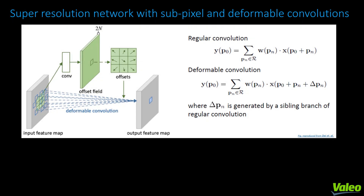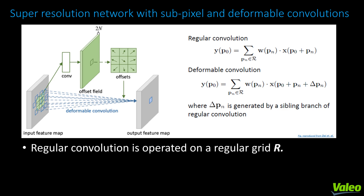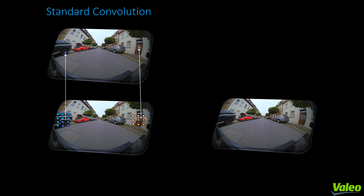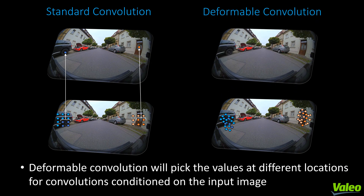One of the crucial decisions in the network's design is the usage of deformable convolutions and pixel shuffle layers in our encoder-decoder based network. For effective detailed preservation of decoded features, we leverage the concept of sub-pixel convolutions to combat the non-uniform angular resolution of pixels. Regular convolutions are operated on a regular grid R, whereas deformable convolution is performed on R but with each point augmented by a learnable offset delta p. To accommodate the distortion introduced by fisheye cameras, we replace normal convolutions with deformable convolutions, since regular CNNs are inherently limited in modeling large unknown geometric distortions due to fixed filter kernels and fixed receptive field sizes.